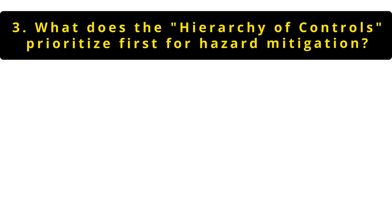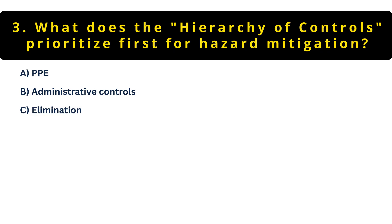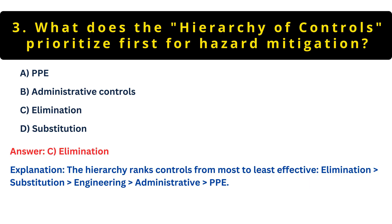Question 3: What does the hierarchy of controls prioritize first for hazard mitigation? Option A: PPE. Option B: Administrative controls. Option C: Elimination. Option D: Substitution. The best answer is C — Elimination. The hierarchy ranks controls from most to least effective: Elimination, removing the hazard entirely, is at the top, followed by substitution, engineering controls, administrative controls, and finally PPE as a last resort.